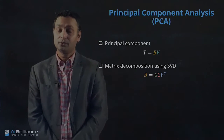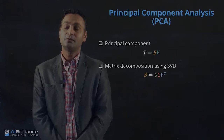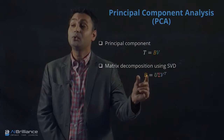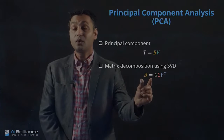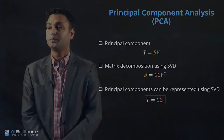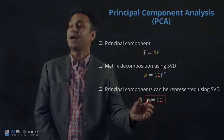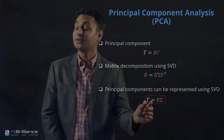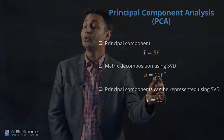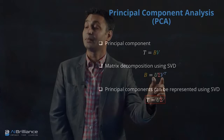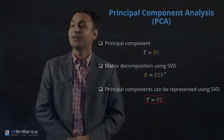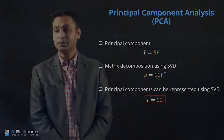So we are not going to the covariance matrix here. In this, we are working essentially with the B matrix itself and doing the singular value decomposition of the B matrix. Once we have done the SVD of the B matrix, we can write the principal component T as a product of just the first two matrices U and sigma. That is another way of doing the principal component decomposition.